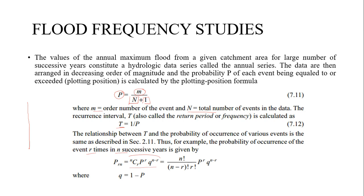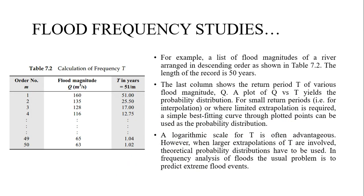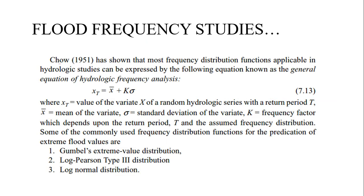For example, with 50 years of flood data arranged in order, the return period for the first position is 51/1. You then plot discharge versus return period, fit a curve, and use it to estimate peak flood for any given return period — this is flood frequency analysis. Chow (1951) showed that frequency distribution functions follow: xT = x̄ + k·σ, where xT is the variate for return period T, x̄ is the mean, σ is the standard deviation, and k is the frequency factor.